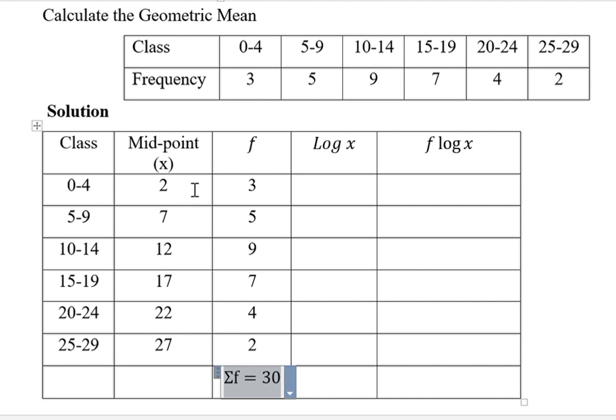Log 2 is 0.2010, log 7 is 0.8451, log 12 is 1.0792, that is log 17 is 1.2304, log 22 is 1.3424 and log 27 is 1.4314.